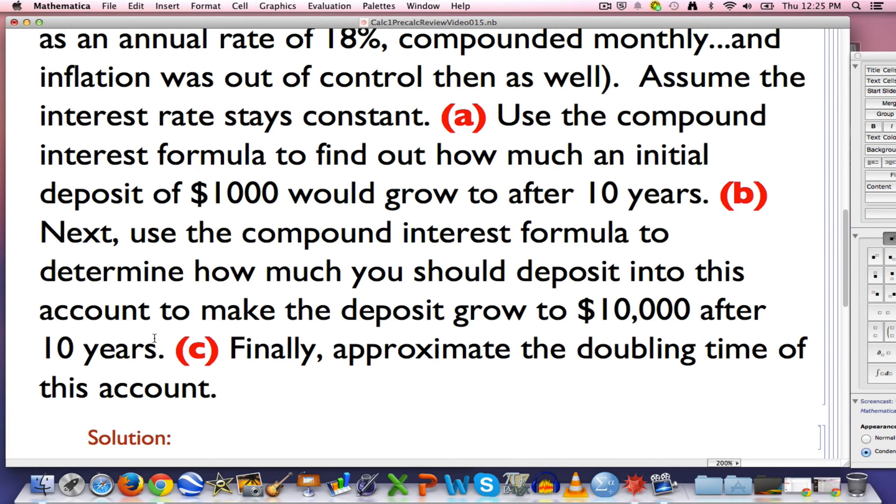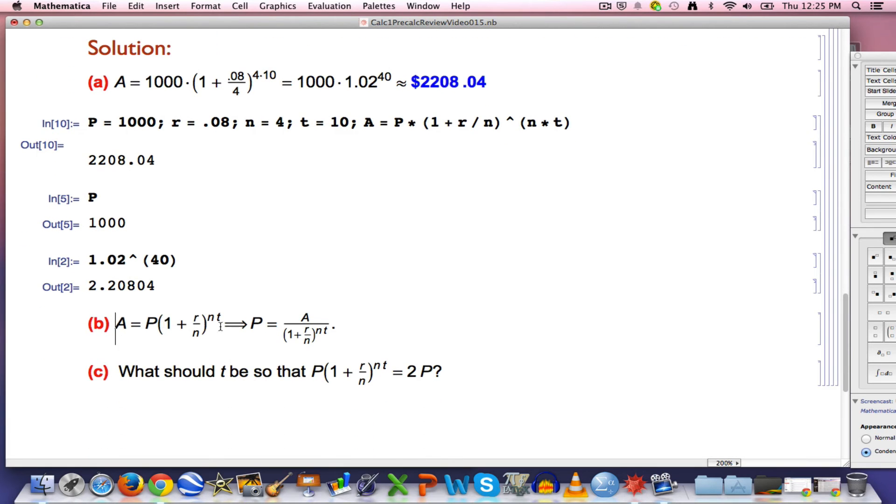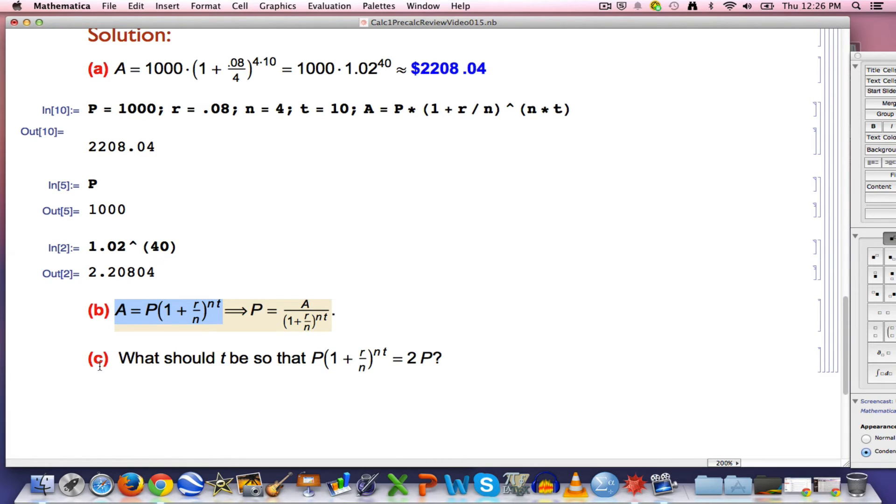Part B. How much should you deposit right now to grow to $10,000 after 10 years? So now we know A is 10,000 but we don't know P. As it stands, the initial writing of the compound interest formula like this, if you think of R, N, and T as being fixed, gives us A as a function of P, the accumulated balance as a function of the principle. The idea of an inverse function is you want to solve for the other variable. I'd like to see if this equation also defines P as a function of A. And it does. It's pretty simple to solve for in this case.